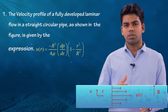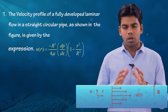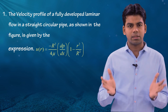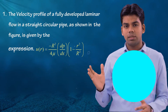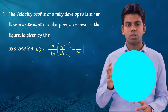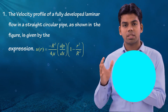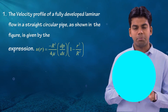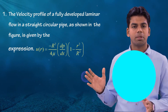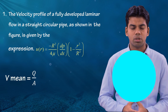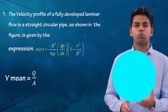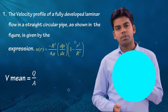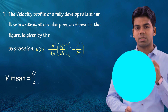First we will discuss the conventional method. We take the circular cross section of this pipe. Since u(r) depends on radius, velocity is not constant throughout the section — it changes with respect to radius. The mean velocity is V_mean = Q/A, where total discharge Q = A × V. So V_mean = Q/A, and we first need to determine Q, the discharge through this pipe.